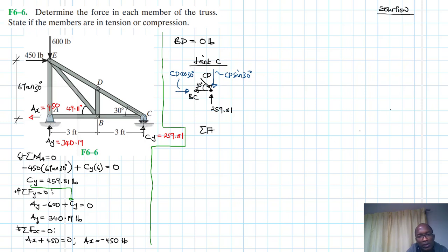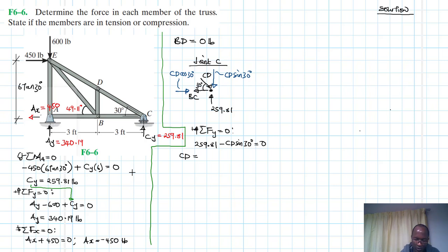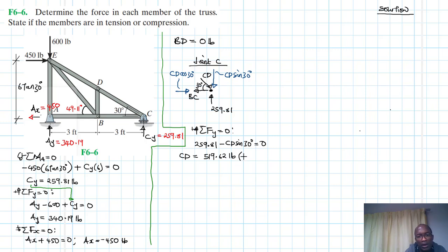Summation of forces in the Y direction equal to zero: we have 259.81 minus CD sin 30° equal to zero. Therefore, CD equals 259.81 divided by sin 30°, giving us CD = 519.62 pounds. Since there is no change of sign, our initially assumed direction is correct — CD is in compression.